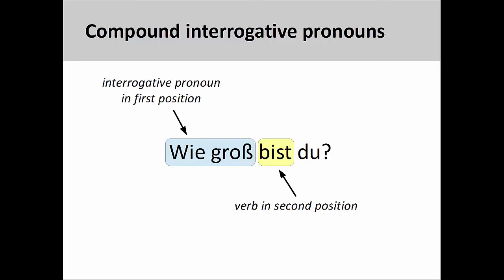We can use any adjective following 'wie' to create a compound interrogative pronoun. Here, for example, you see the adjective 'groß' (tall, large) used to inquire about the height of a person. 'Wie groß bist du?' (How tall are you?).